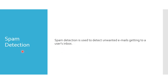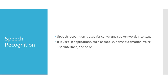Spam detection is a very common application of machine learning through natural language processing. From an email, we have to identify whether it is spam. Spam detection is used to detect unwanted emails getting into a user's inbox. Text-to-speech and speech-to-text are also very common NLP applications, used in mobile assistants, home automation, and voice user interfaces. Speech recognition converts spoken words into text, and chatbots also require identifying spoken words.